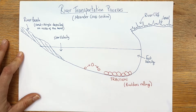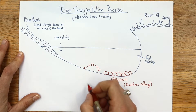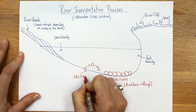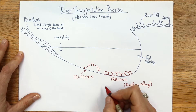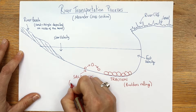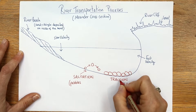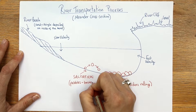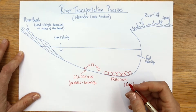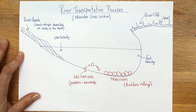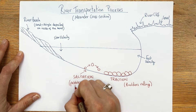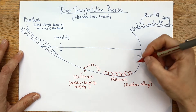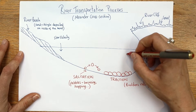After traction, when boulders get a little bit smaller - they're still quite angular at this stage - this is called saltation. Draw an arrow to it: saltation. They are smaller than our big boulders - more like pebbles - and they are bouncing. In the classroom we sometimes use tennis balls to show the bouncing, or you could describe it as hopping along the riverbed.